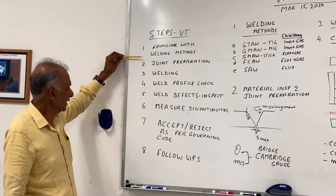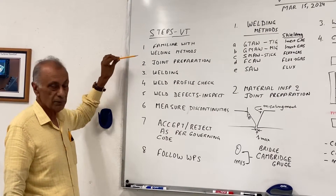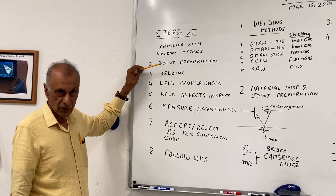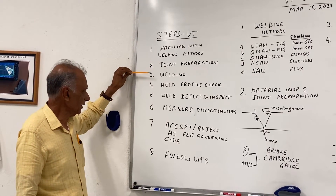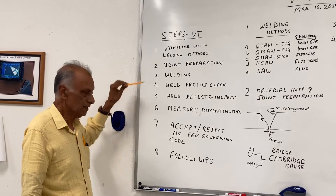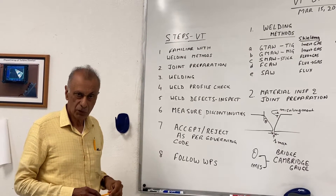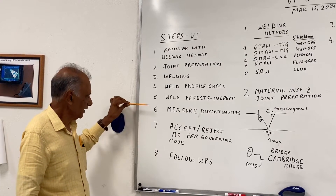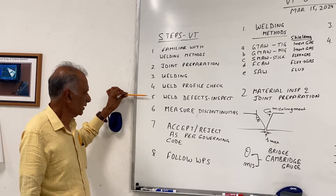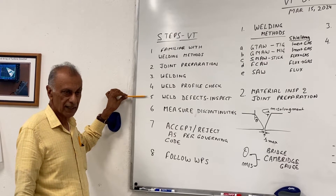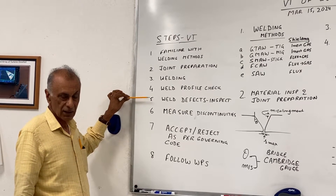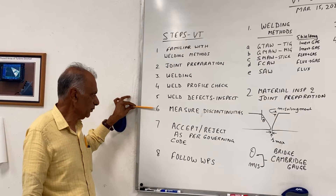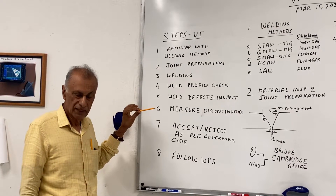The next step: the first step for welding is joint preparation. We prepare the joint for the welding, then we do the welding, and then after the welding is done, the next step is to check the profile of the weld — the convexity, concavity — and then we look for defects in the weld: cracks, lack of penetration, undercut. And then if we see any discontinuities, we measure the discontinuity.